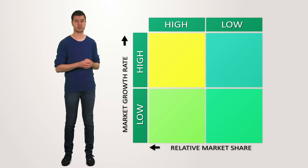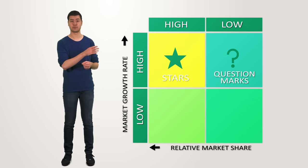The four resulting quadrants can be labeled with the terms stars, question marks, cash cows and the dogs. We will go through them one by one beginning with the question marks.